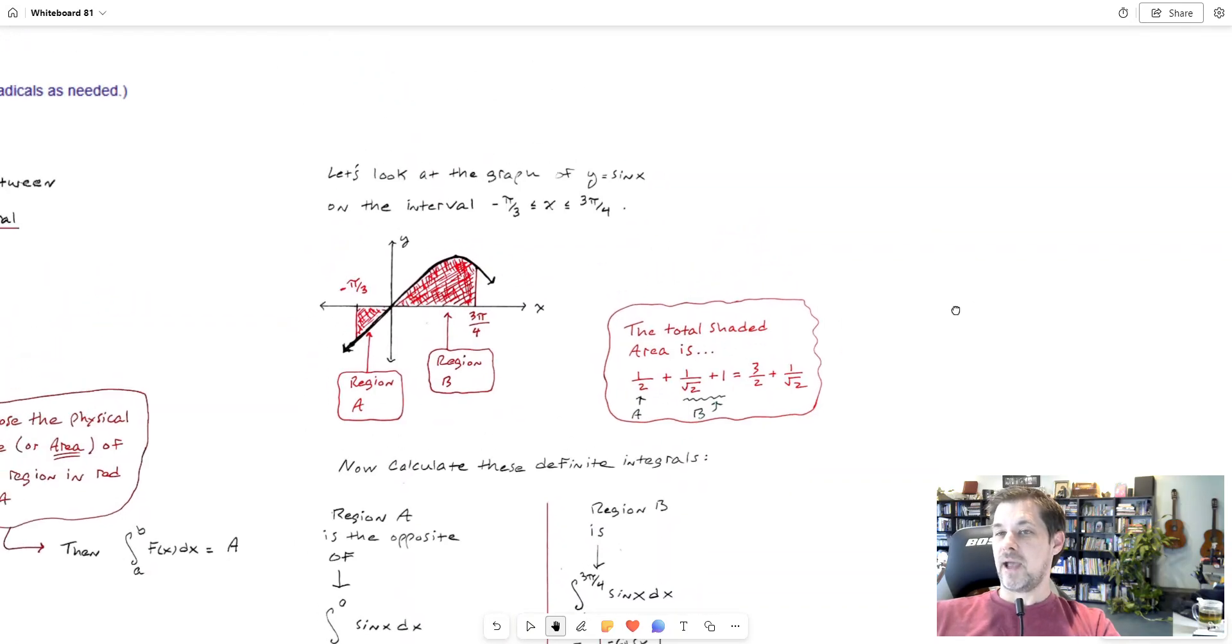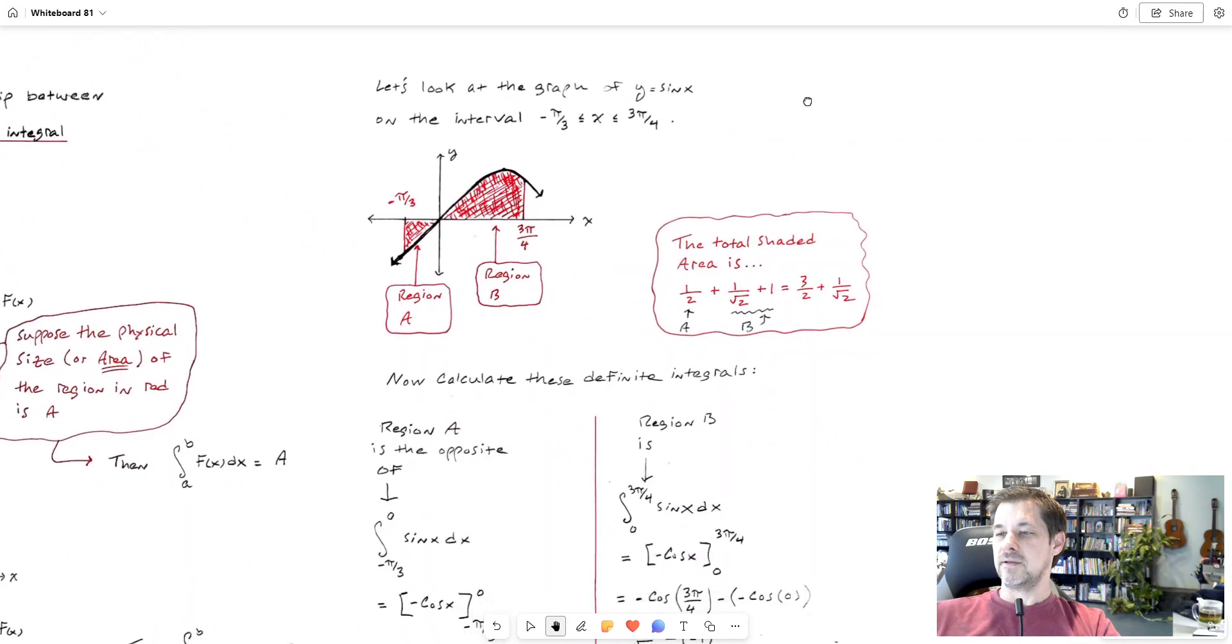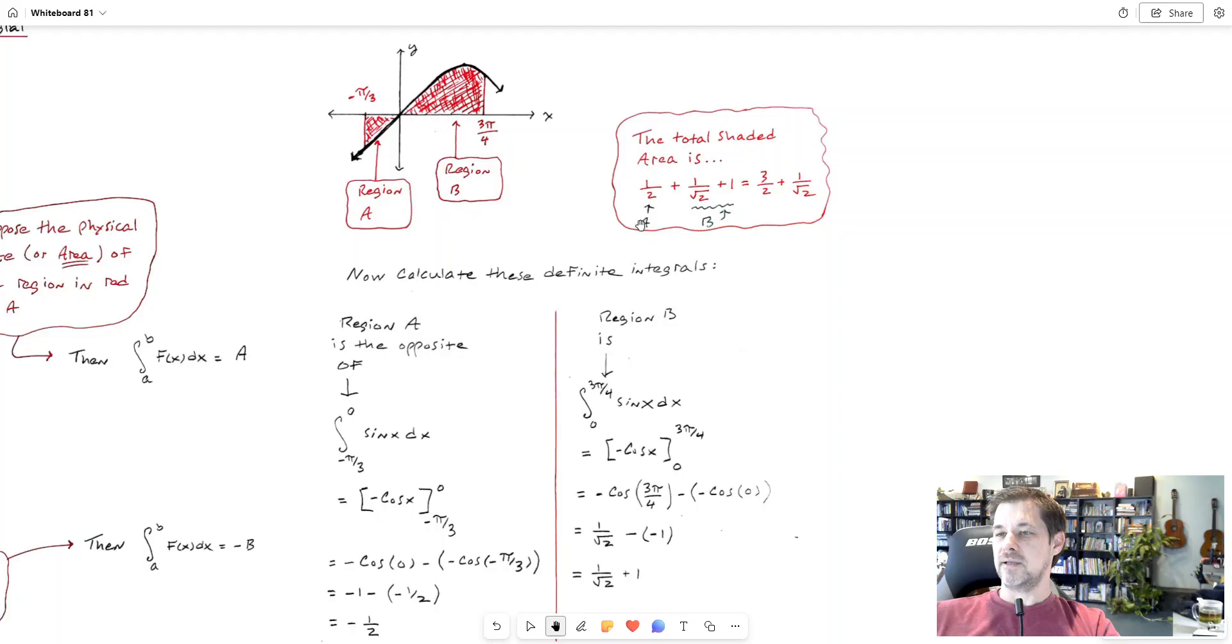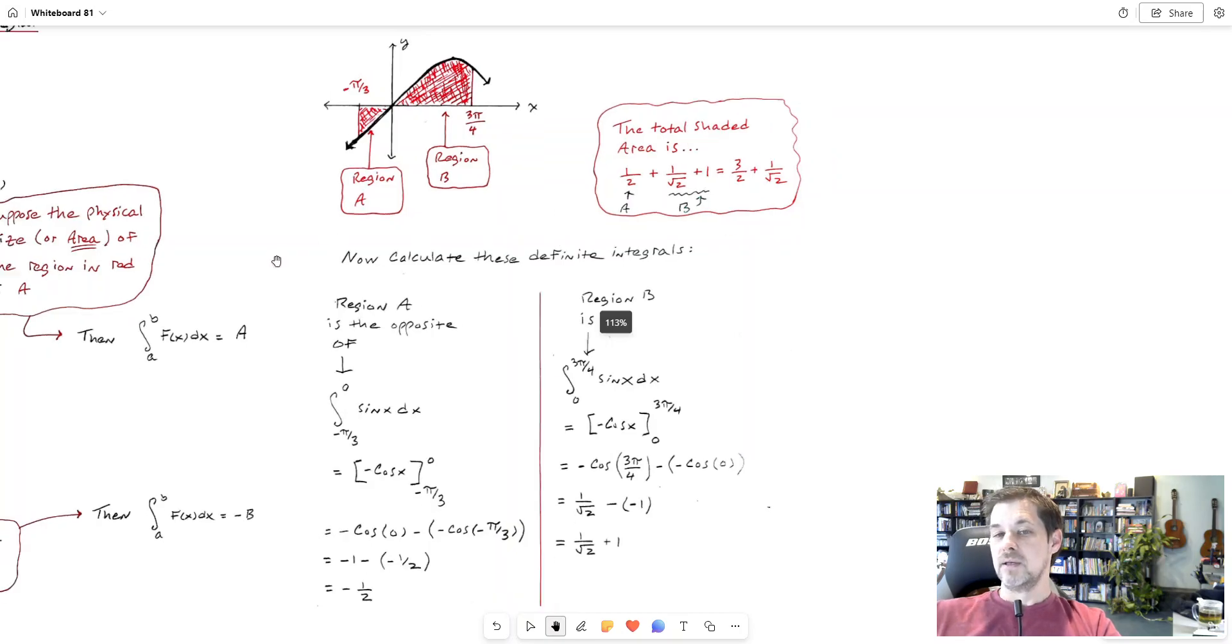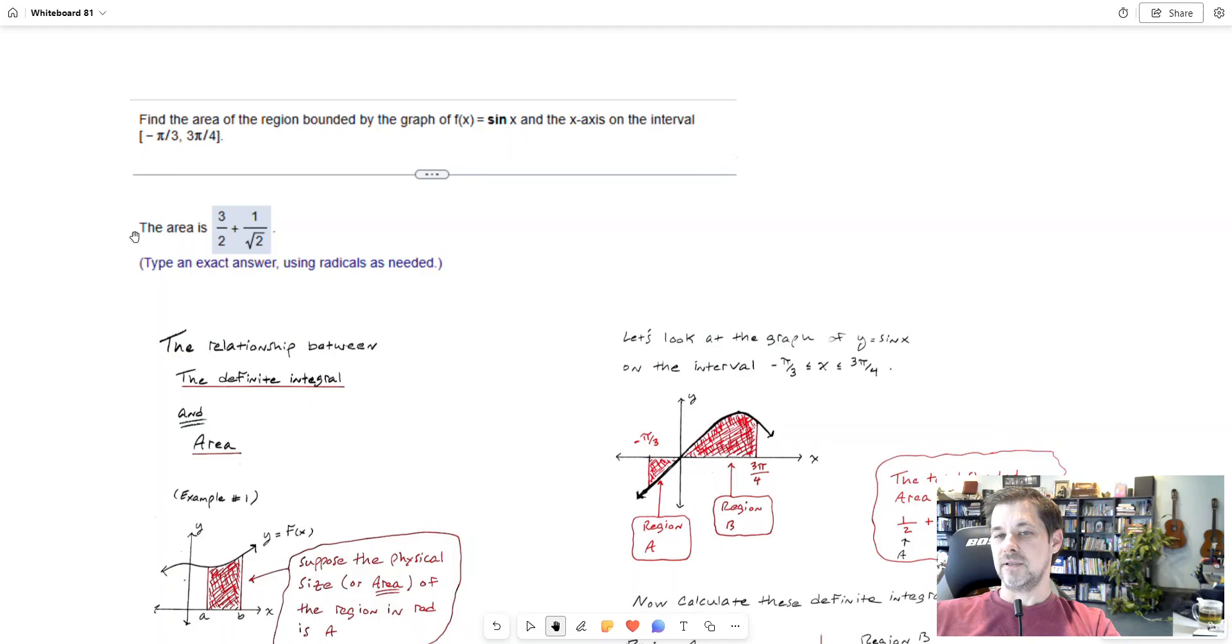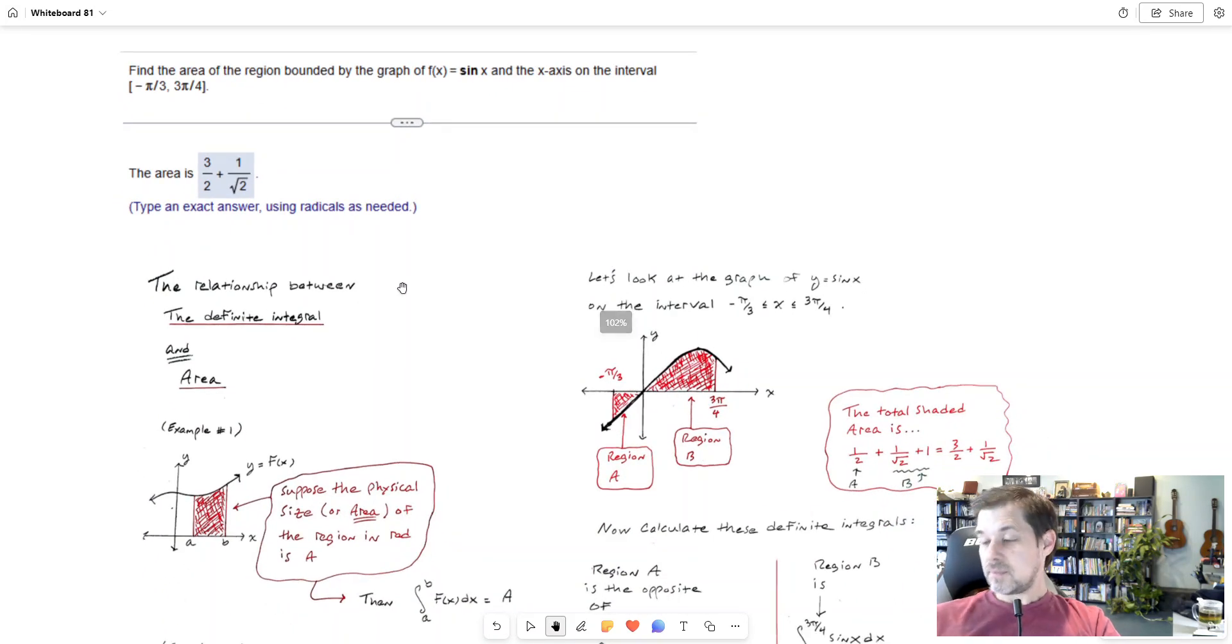All right, now so I know how big A and B are individually. The total shaded area as indicated in this question is going to be the size of A and the size of B. So by my calculations that's one-half plus 1 over root 2 plus 1. I can add one-half and 1, that's three-halves plus 1 over root 2. And that's the answer that you see given there.